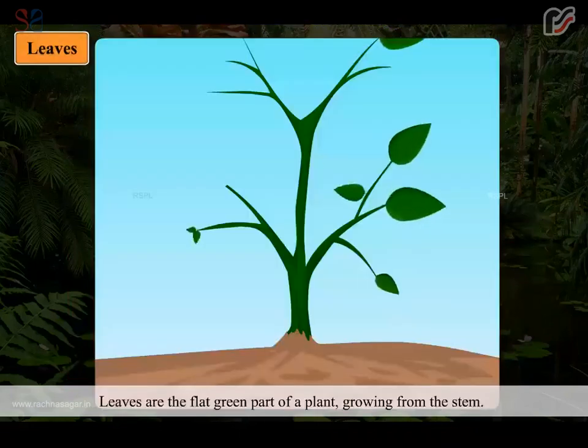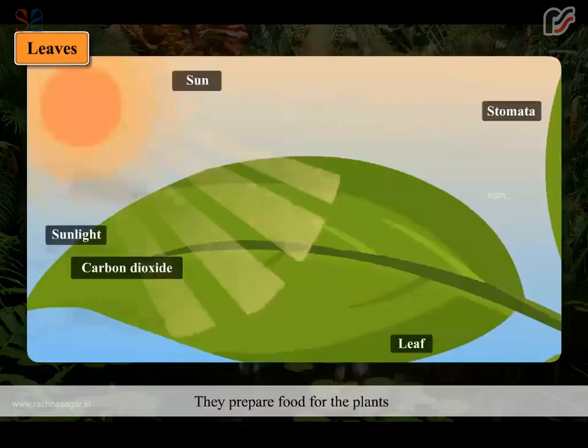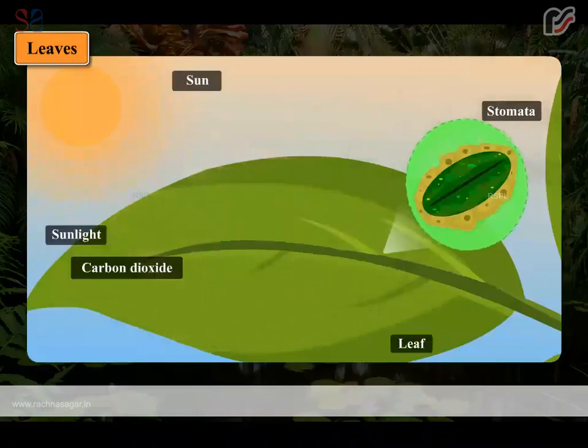Leaves are the flat green part of a plant growing from the stem. They prepare food for the plants.